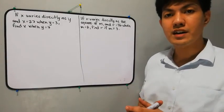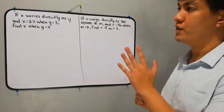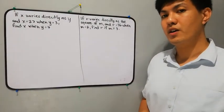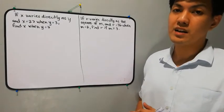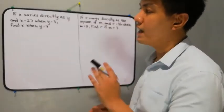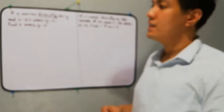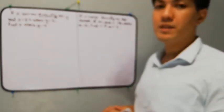Solving direct and inverse variation is our next part. We have here two examples, so we're going to solve for these two given problems. I will give you first the steps on how to solve a variation. The first step is to identify if the given is direct or inverse variation. Here in our first problem, we have 'x varies directly as y,' so we can say that this given problem is a direct variation.